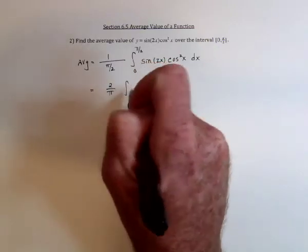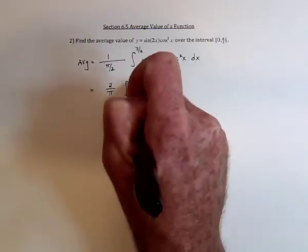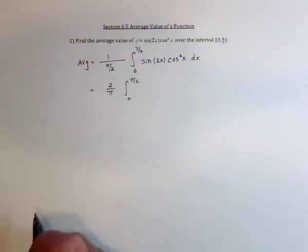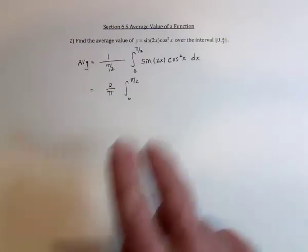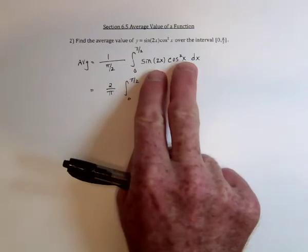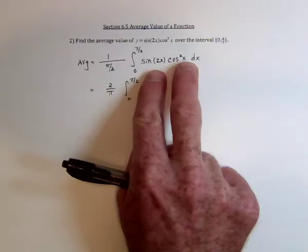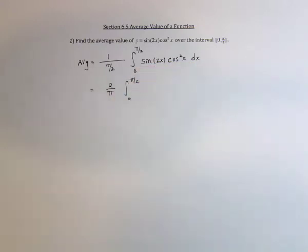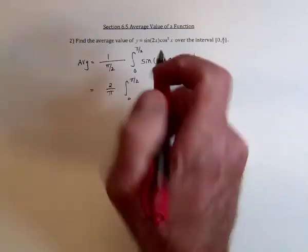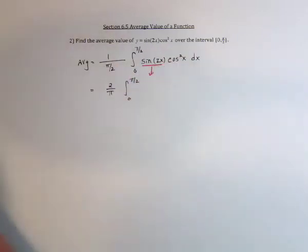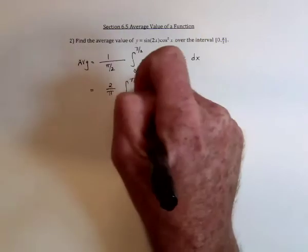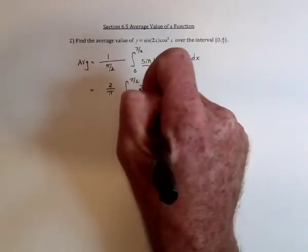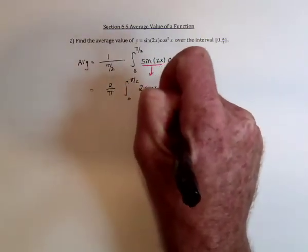And then we need to somehow integrate a sine of 2x with a cosine squared of x. In order to do that, we either need both of these to be 2x or both of these to be x. I think I prefer to change this one and so get an identity for sine of 2x, which is 2 times sine of x times cosine of x.